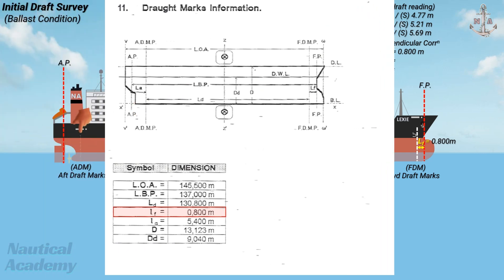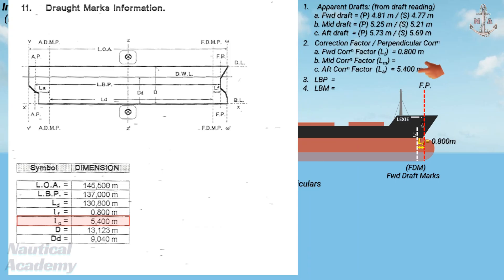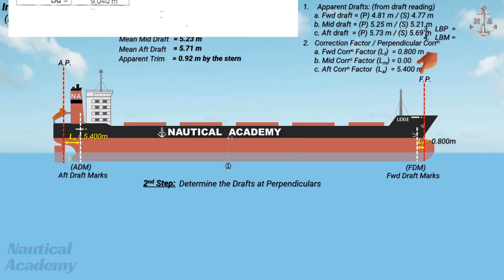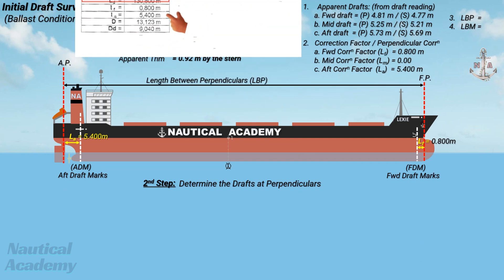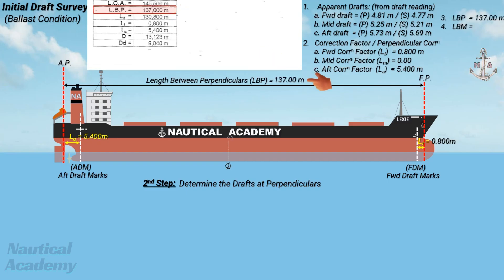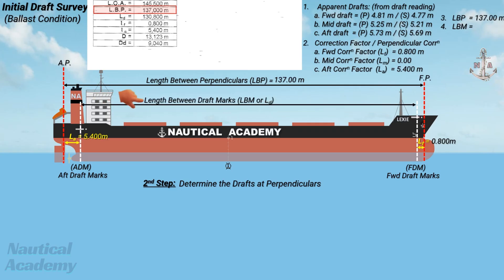For the aft draft marks, the distance L sub a between the aft draft marks and the aft perpendicular is 5.400 meters — referred to as the aft correction factor. For the midship draft marks, it is located exactly at midships, so the correction factor is 0. The length between perpendiculars is 137.00 meters, and the length between draft marks is 130.800 meters.